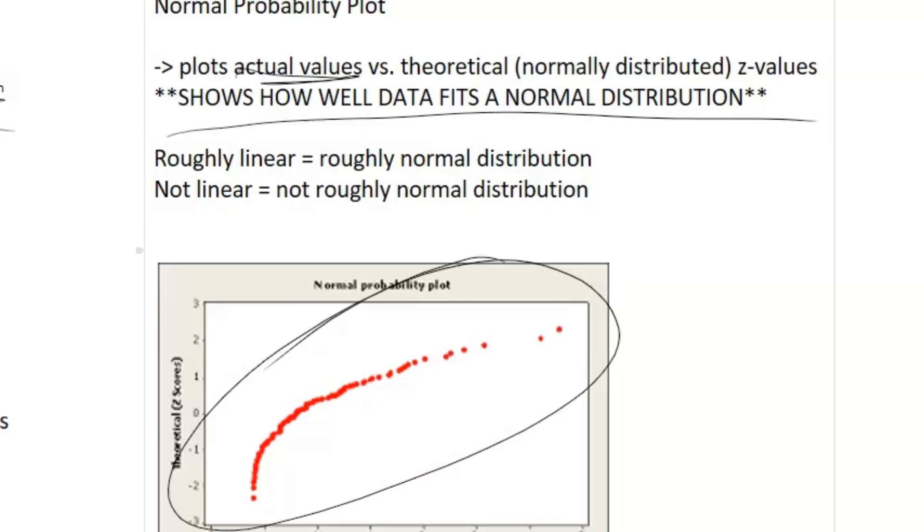And if it's not linear, it's roughly not a normal distribution. And yeah, that does it for everything you need to know for AP Statistics Unit 1.